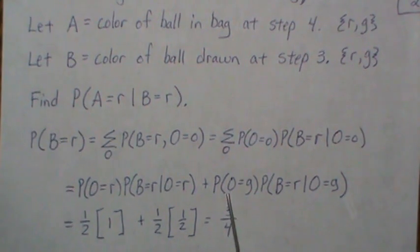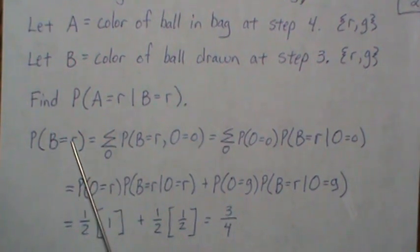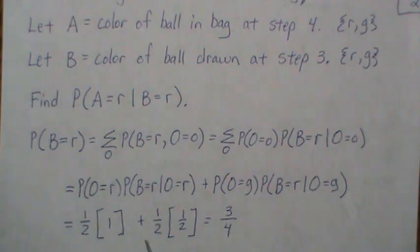The probability that the original ball was green is a half. The probability that we draw out a red, given the original was green, is one half. So the probability of B equal to red is three-fourths.